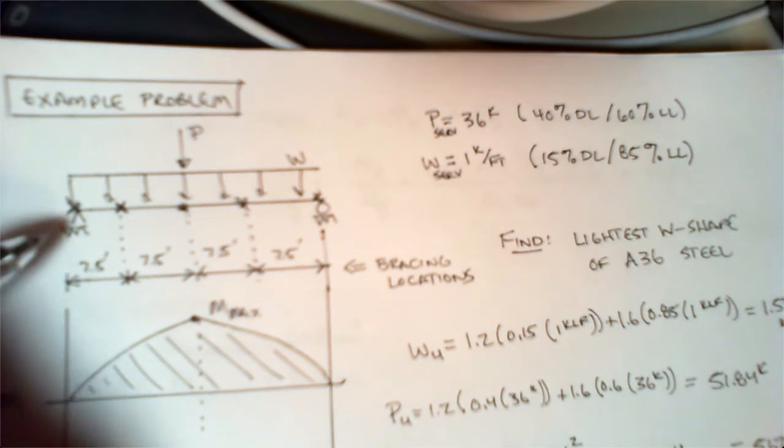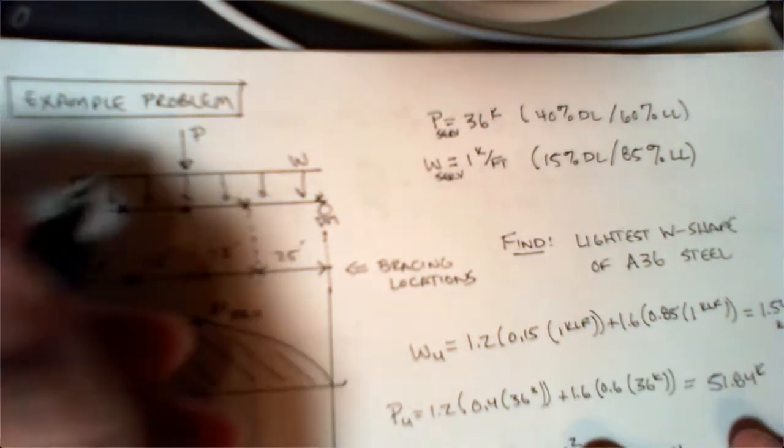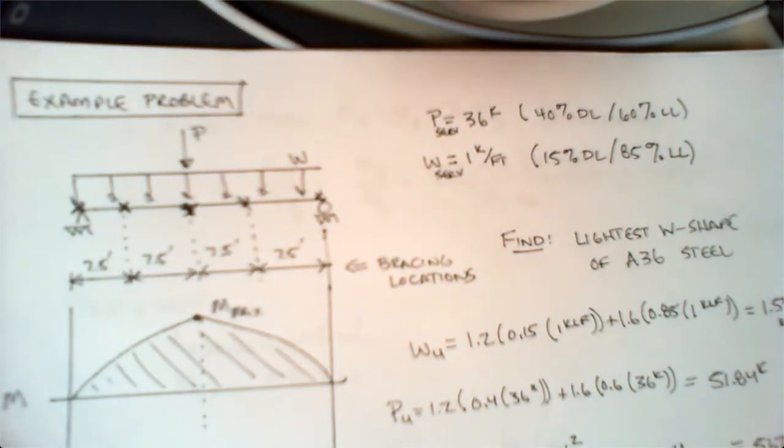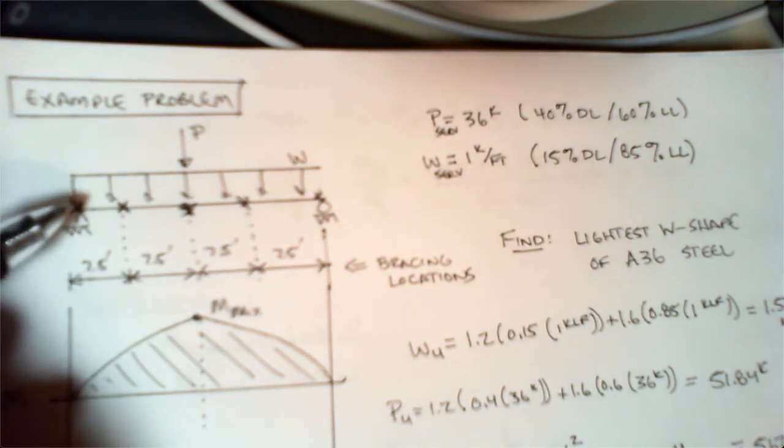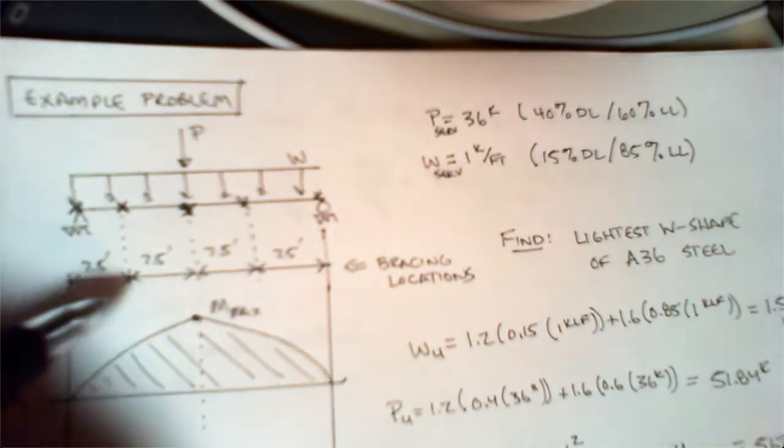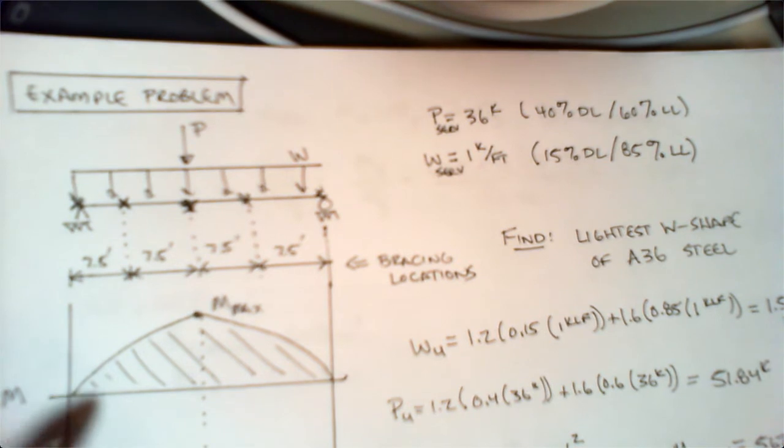On every problem that you come across, you have to ask yourself: where are my bracing points? We're going to brace this thing, maybe with a slab member or something, at the quarter points. So we'll brace it at the ends and then at seven and a half feet, and so forth. The whole span length is 30 feet long.